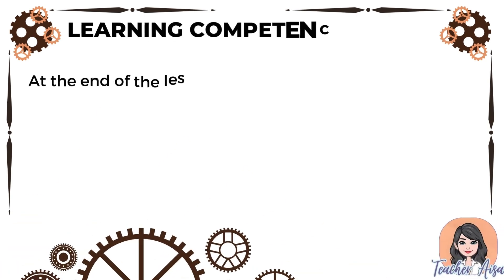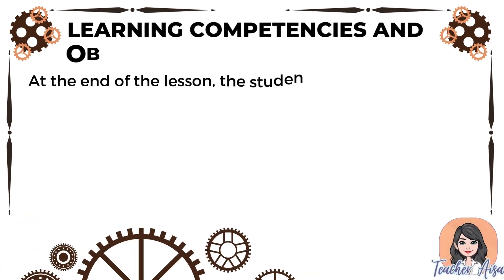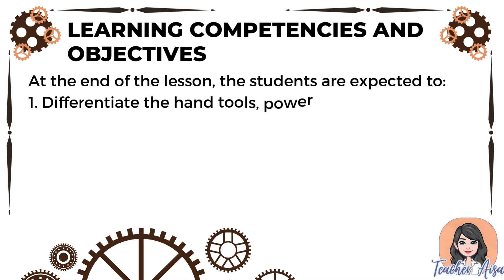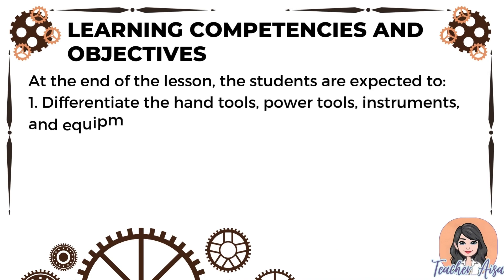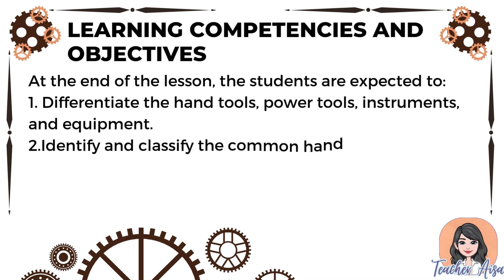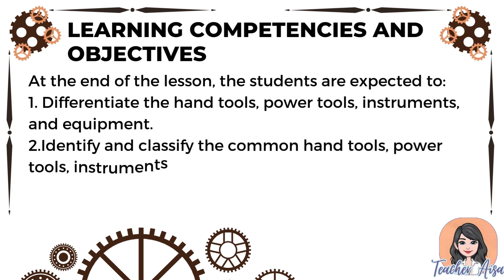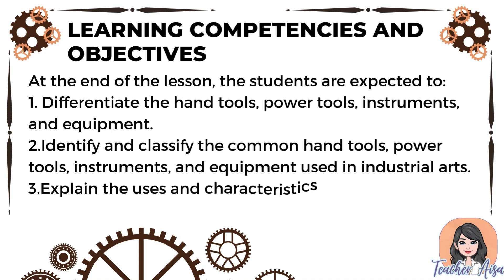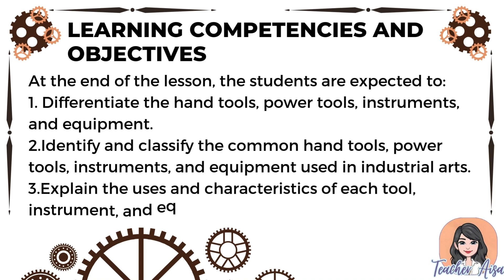For the learning competencies and objectives, at the end of the lesson the students are expected to: one, differentiate the hand tools, power tools, instruments, and equipment; two, identify and classify the common hand tools, power tools, instruments, and equipment used in industrial arts; three, explain the uses and characteristics of each tool, instrument, and equipment.